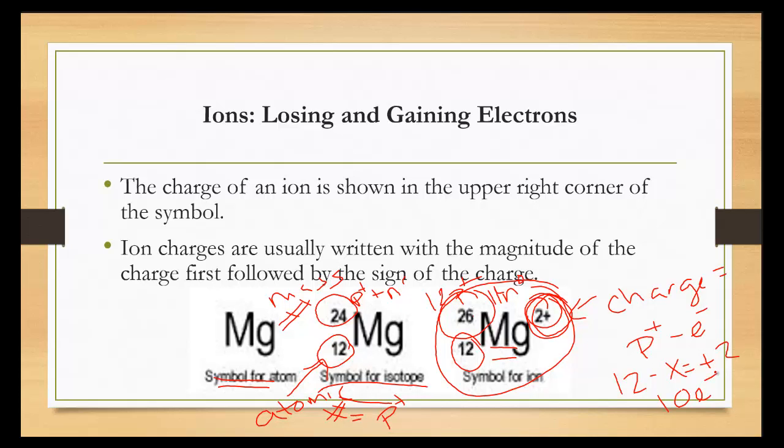Ion charges are usually written with the magnitude of the charge first, followed by the sign of the charge — so one positive, two positive, one negative, and so on.